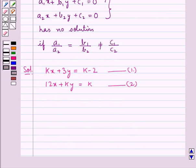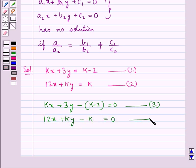Let's move the constant terms from the right hand side to the left hand side. So, we get on rearranging equation 1 as kx plus 3y minus k minus 2 is equal to 0. This is equation 3. Then, on rearranging equation 2, we have 12x plus ky minus k is equal to 0. Let this be equation 4.